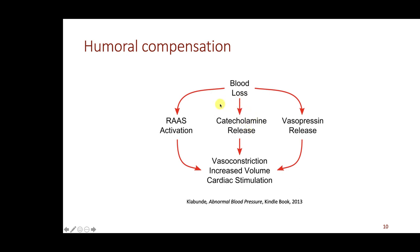Blood loss also stimulates catecholamine release from the adrenal medulla. The catecholamines — epinephrine and norepinephrine — act on alpha and beta receptors to increase blood pressure through vasoconstriction and cardiac stimulation. They also increase blood volume by acting on beta-2 receptors in the kidney and by further stimulating the RAS system. And of course the catecholamines will also stimulate the heart directly.